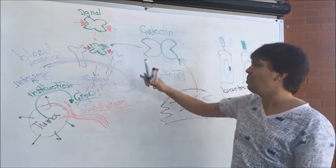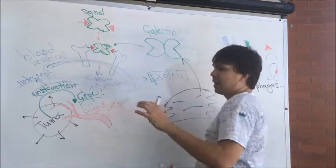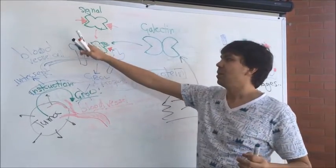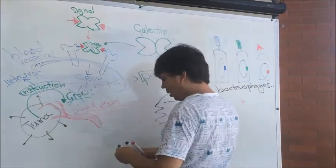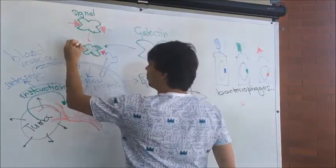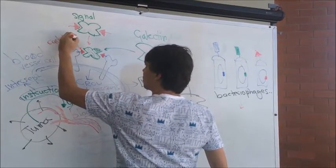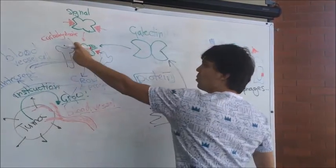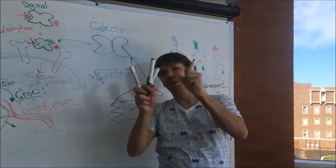So the way that the cross-linking happens is by this two-headed Pac-Man sort of biting on these red triangles which are carbohydrates. It binds to one carbohydrate in one receptor and one carbohydrate in another receptor and sort of brings them together.